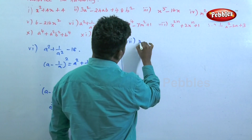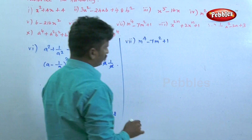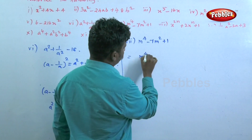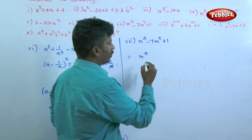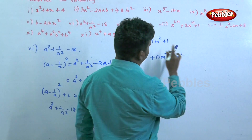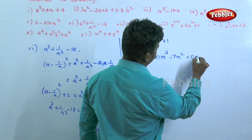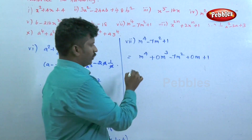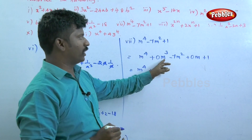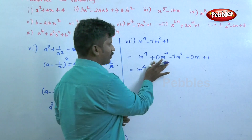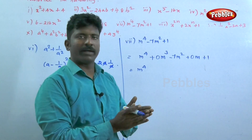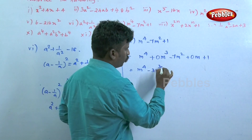The seventh question: m to the power 4 minus 7m squared plus 1. We need to factor this expression. Looking at the powers, m to the power 4 and m squared and constant 1. We try adding and subtracting terms like 3m cubed minus 3m cubed or similar to facilitate factoring.